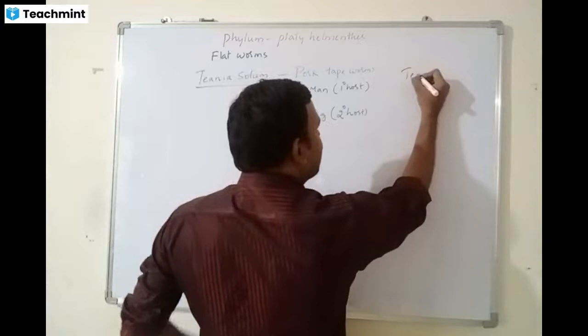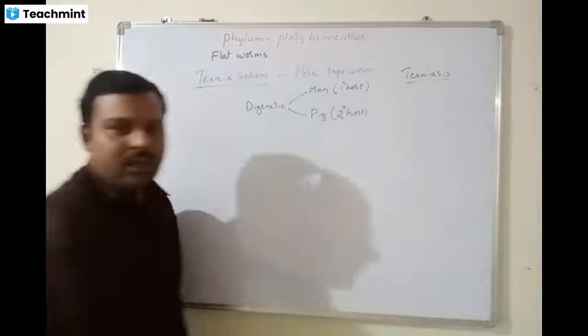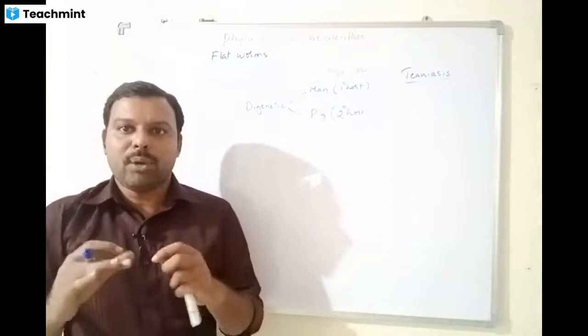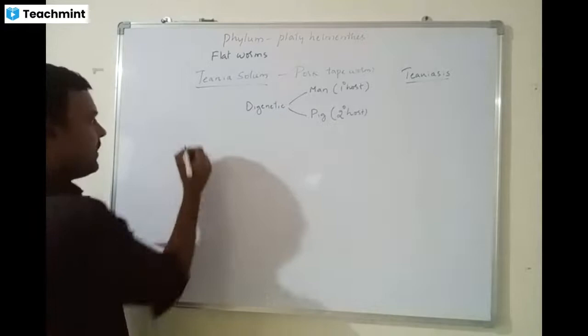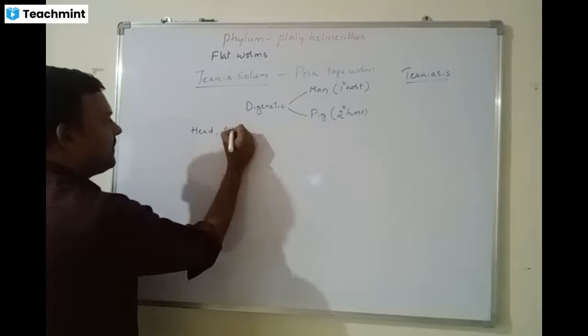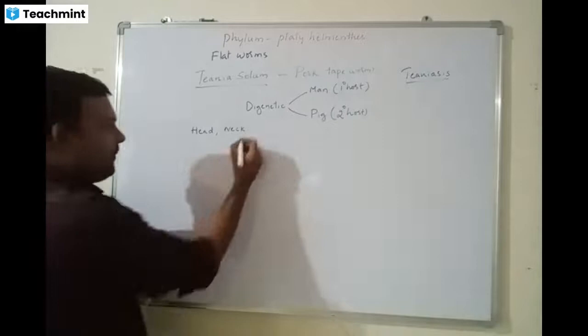The disease Taenia solium causes in man is called Taeniasis. It infects through eating improperly cooked pork meat. The Taenia solium body has three parts: head, neck region, and the strobila.